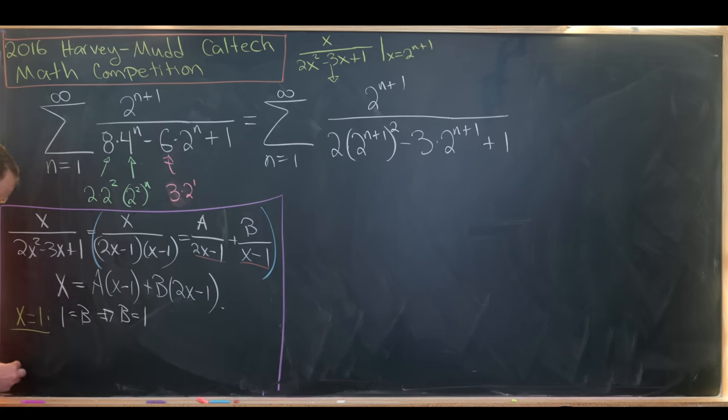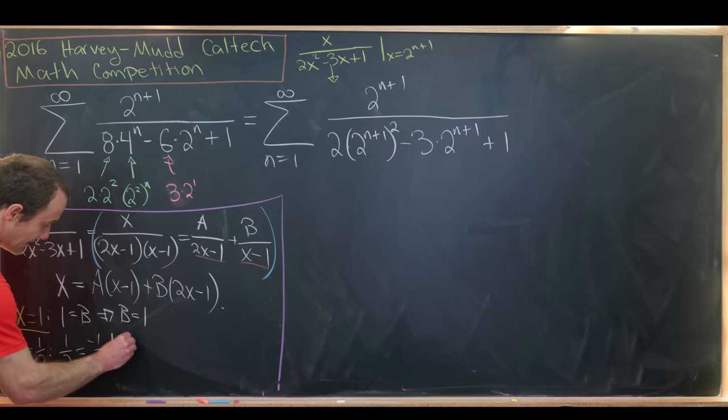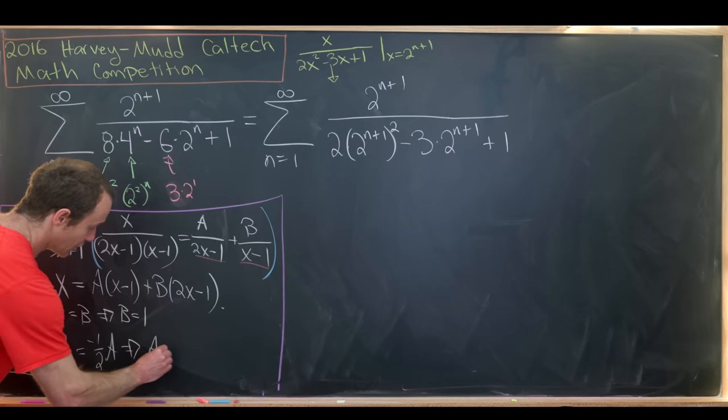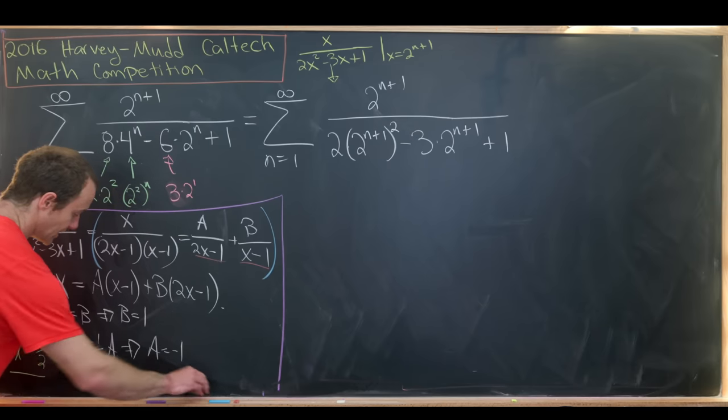And then if we likewise evaluate this at x equals 1/2, what will we get? Well, we get a half on the left-hand side, and then this B term cancels, and we're left with A times (1/2 - 1) or negative 1/2 A. That tells us that A equals negative 1.